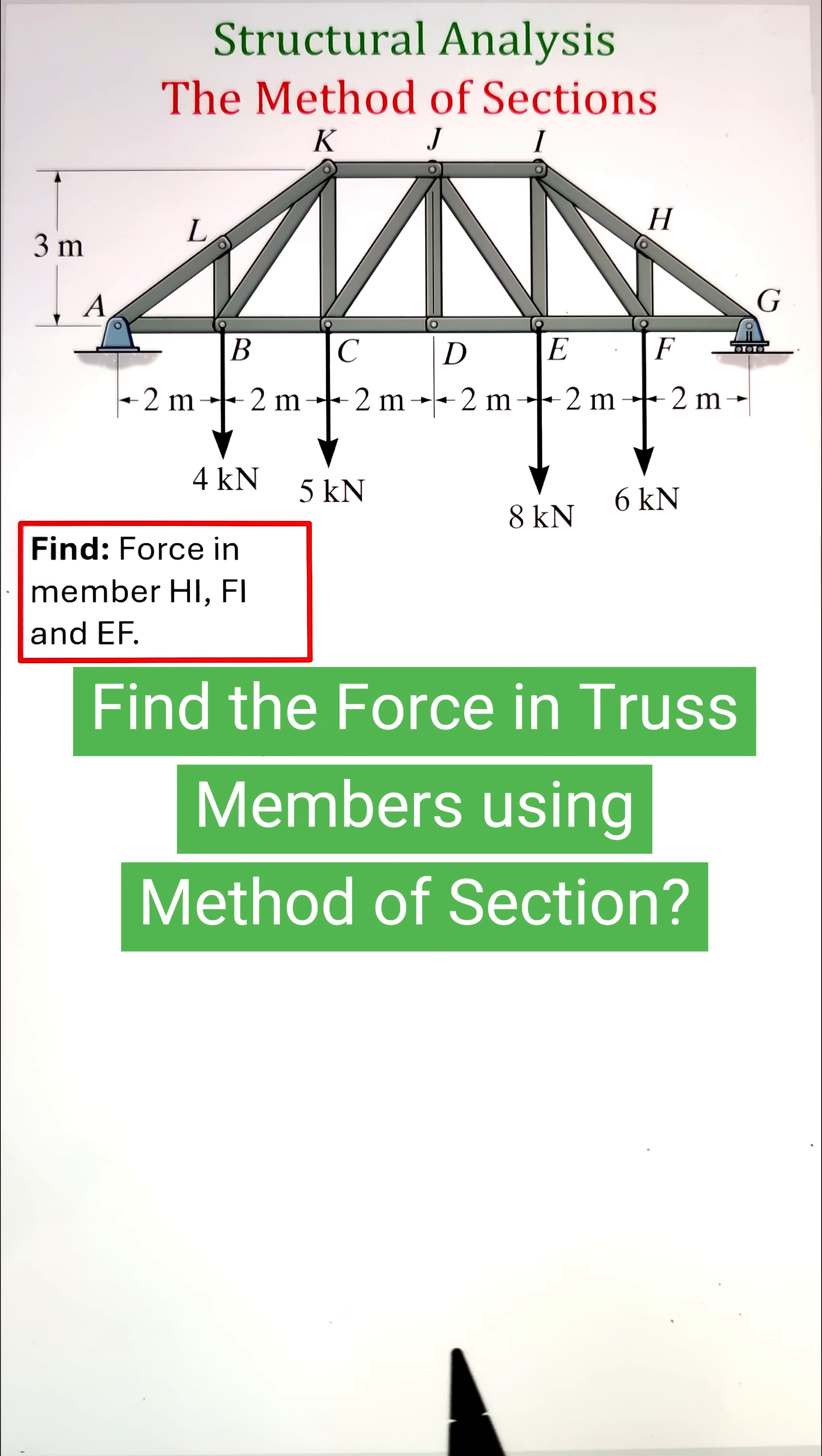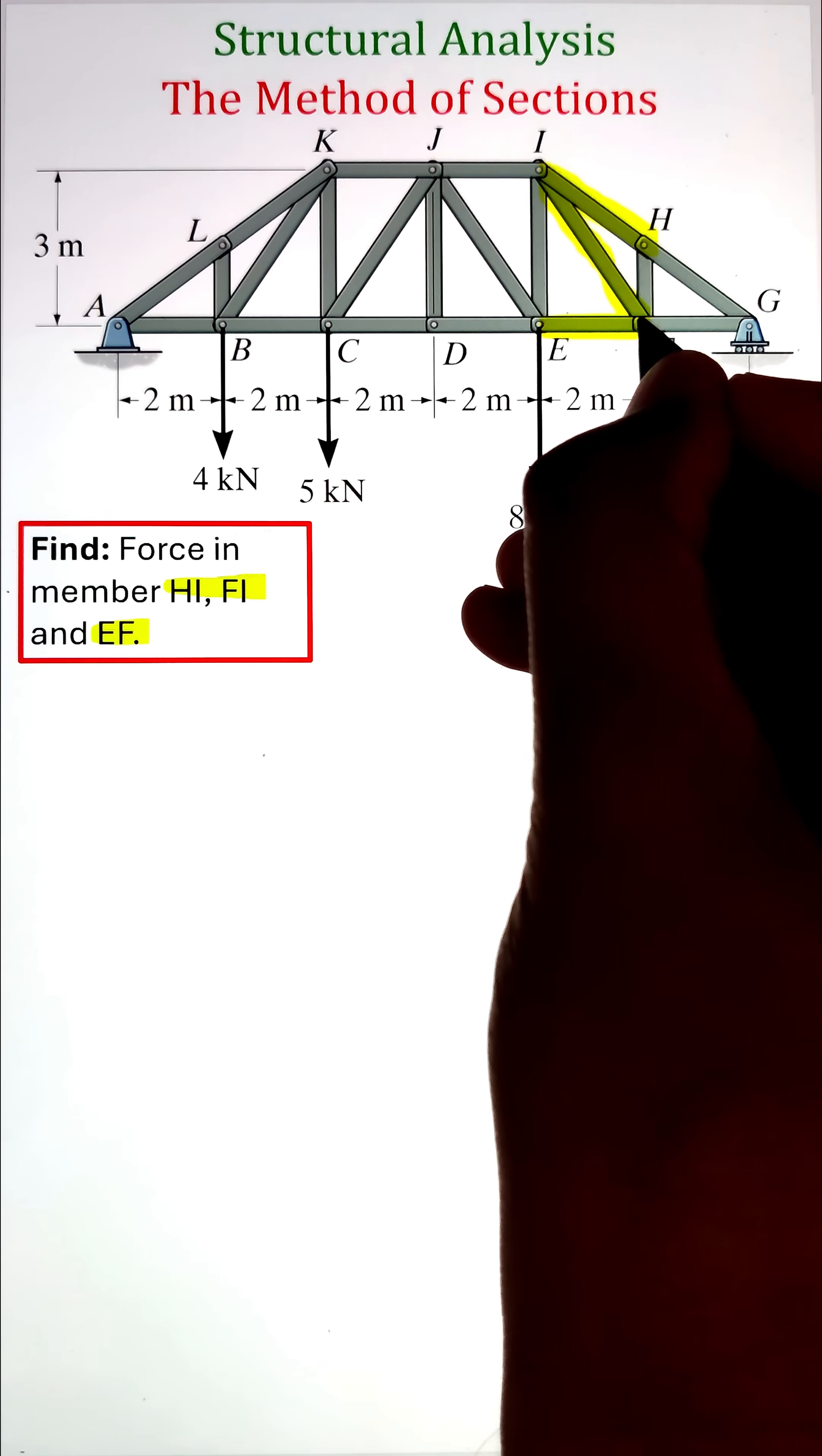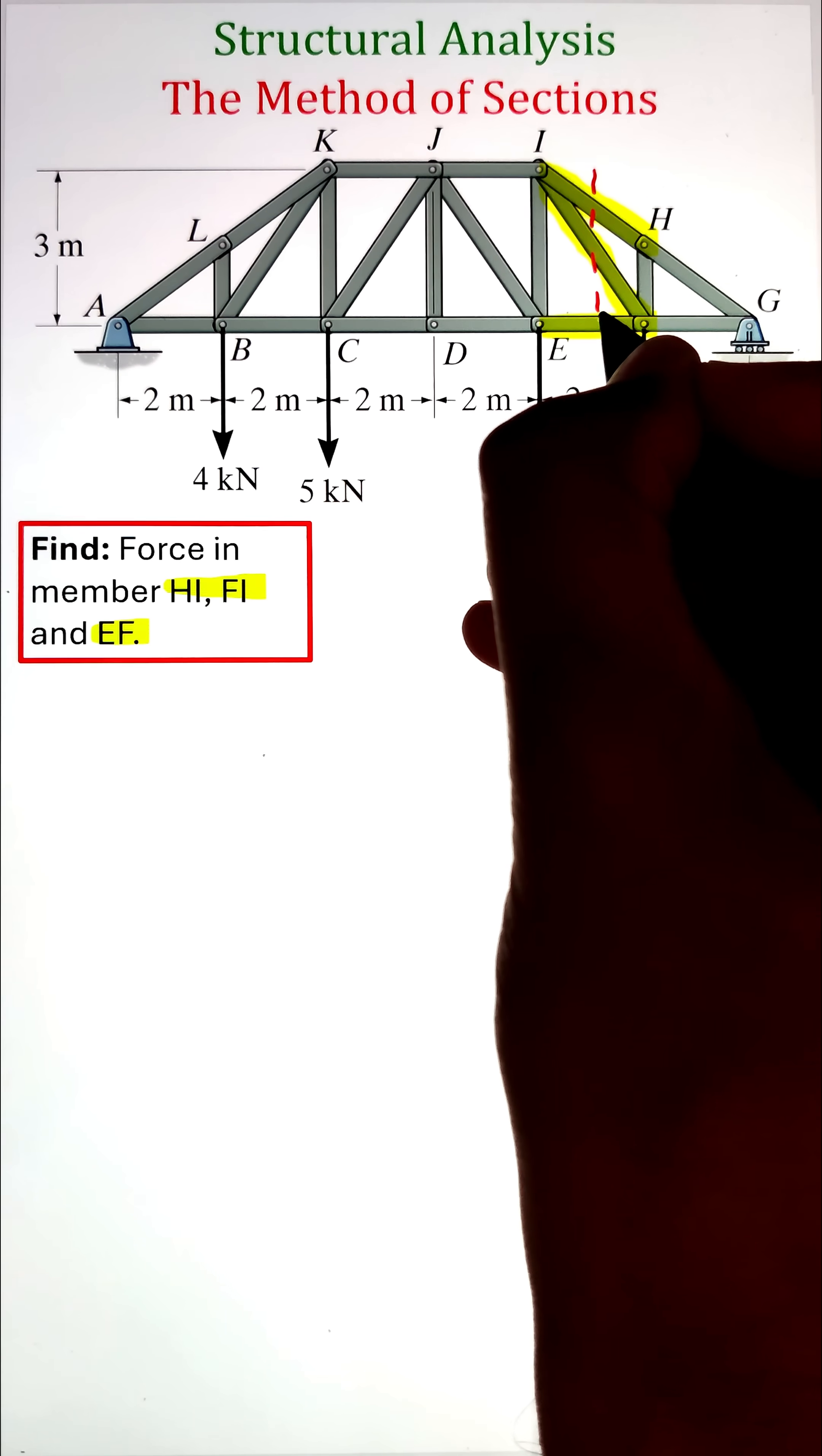In order to find the forces in truss members HI, FI, and EF, we can utilize the method of sections in which we make a cut along the members we are interested in and then separate the structure into two halves.